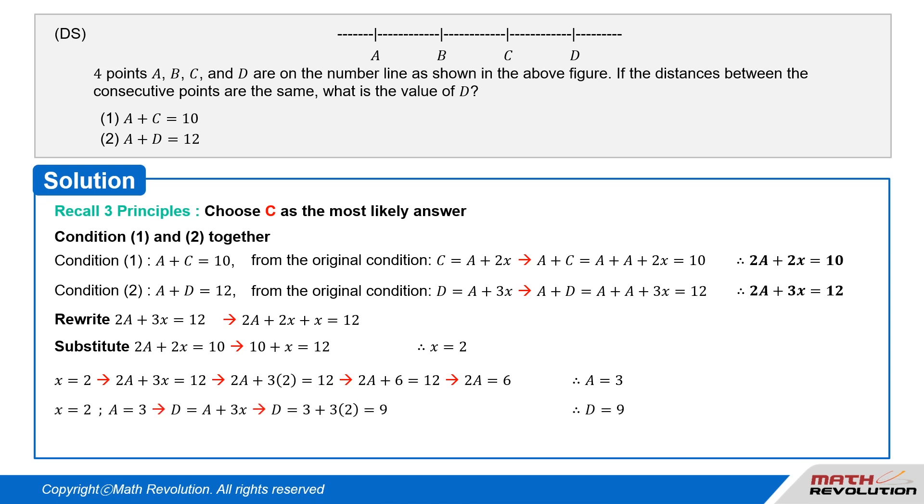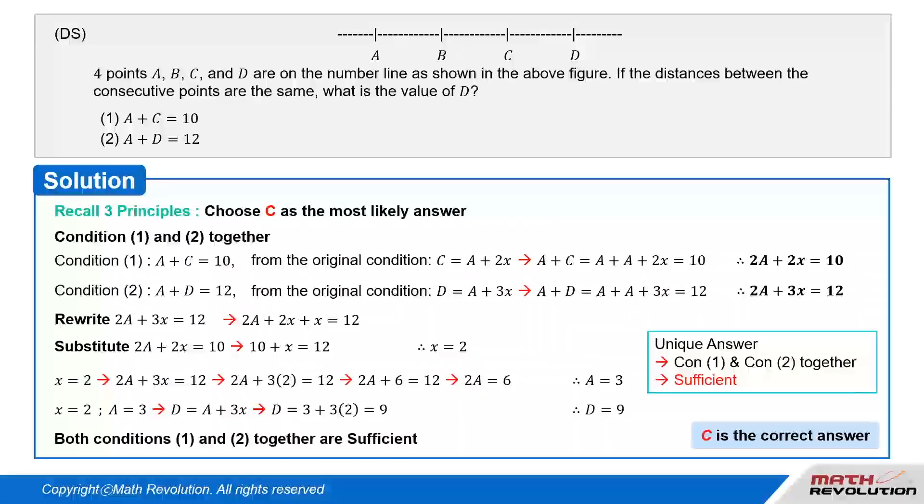Substituting the value of A and x in D equals A plus 3 times x, we get D equals 3 plus 3 times 2, which equals 9. The answer is unique, so the conditions combined are sufficient.